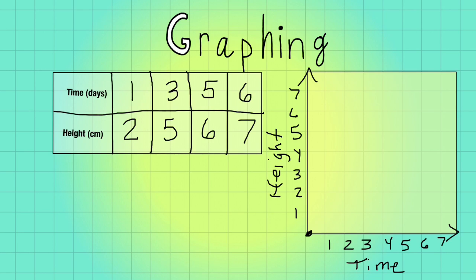All right, so the time at one, right here, will be two. Or I'm sorry, the height at one day will be two, so I'm going to plant that right here. The height at three days will be five. And then the height at five days rather will be six, and the height at six days will be seven.